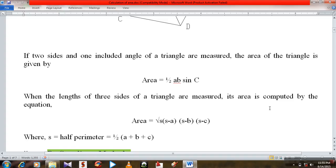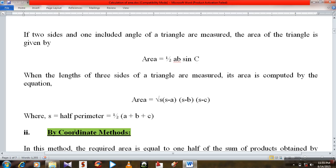its area is computed by the equation area equal to root over s into s minus a into s minus b into s minus c, where s equal to half perimeter, half into a plus b plus c.